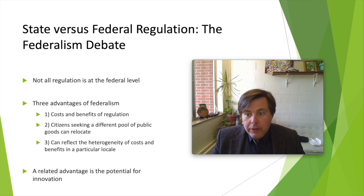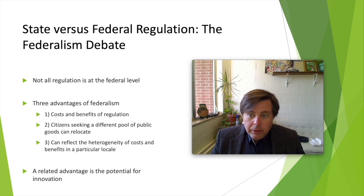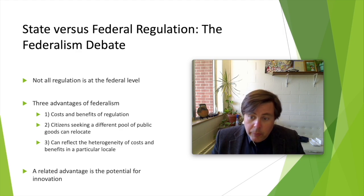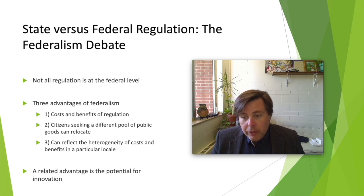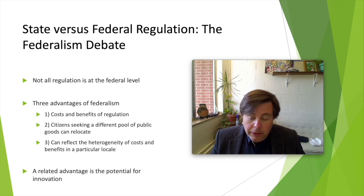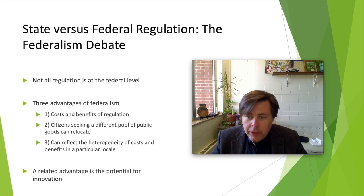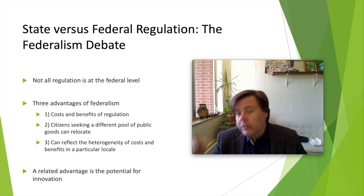Not all regulation occurs at the federal or national level. In the United States we can have regulation at the state level — there are 50 states each with its own somewhat different rules, regulations, and regulatory agencies. We can also have regulation at the local level, for example the city of Eau Claire, Wisconsin, which has its own rules and regulations.